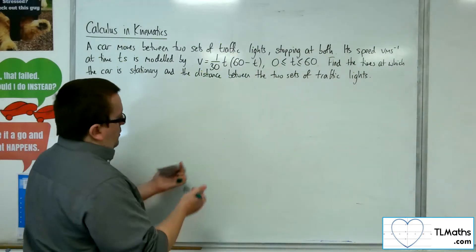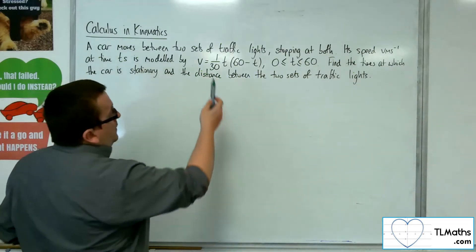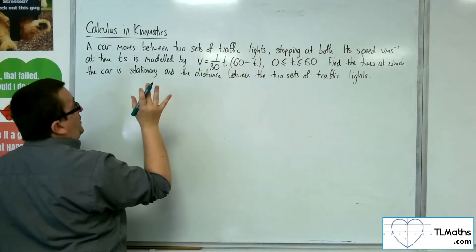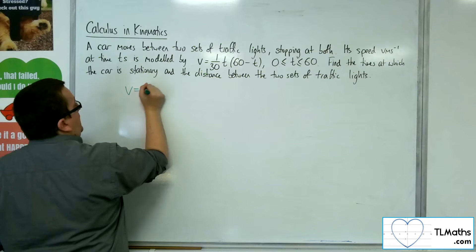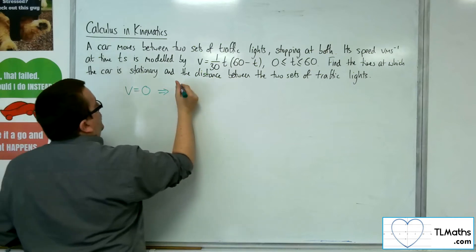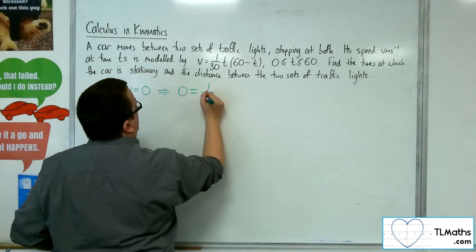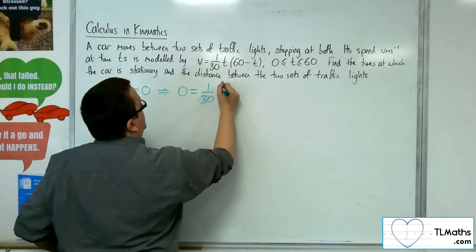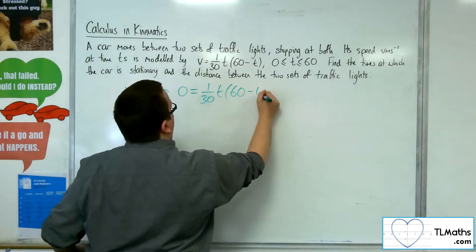So, this is our v, and the car will be stationary when v is 0. So we want to solve the equation 0 is equal to 1 thirtieth, 1 thirtieth, try that again, t, 60 minus t.